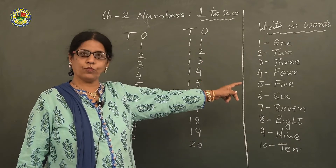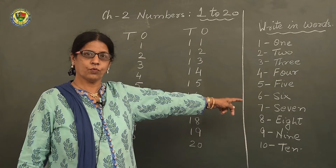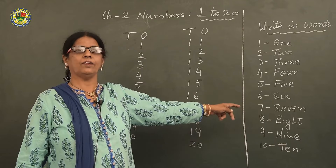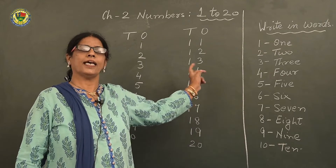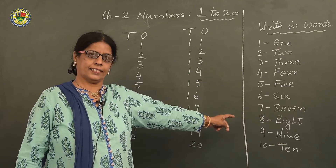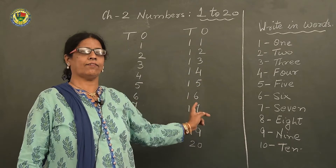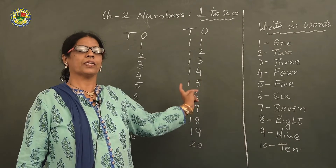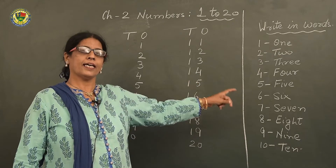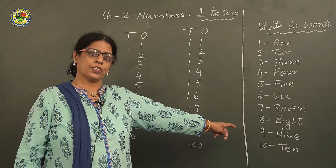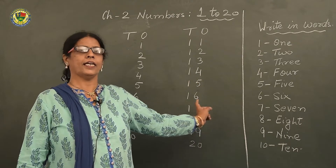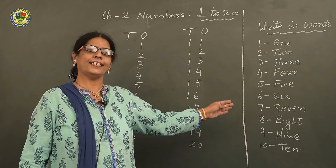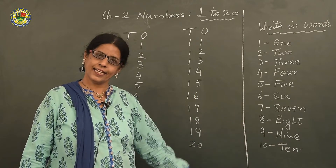4 — F, O, U, R. 5 — F, I, V, E. 6 — S, I, X. 7 — S, E, V, E, N. 8 — E, I, G, H, T. 9 — N, I, N, E. And 10 — T, E, N.